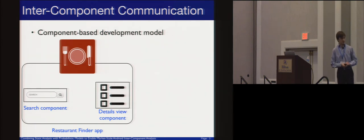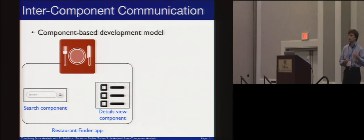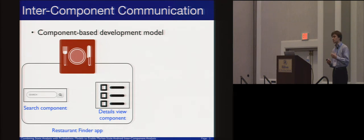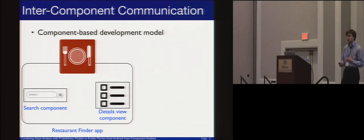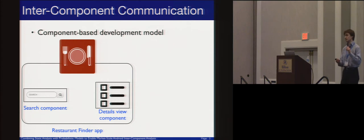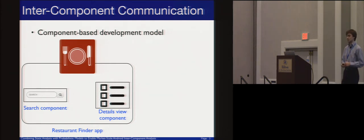Let me show you a simple example. Say you have a restaurant finder application that allows users to find restaurants according to specific criteria. It has two components: a search component which allows the user to look for a specific place, and another component that gives a detailed view of a specific place. If the user wants to find a Chinese restaurant in St. Petersburg, she inputs that into the search component, gets results, clicks on one, and the details view component starts and gives details about that particular restaurant.